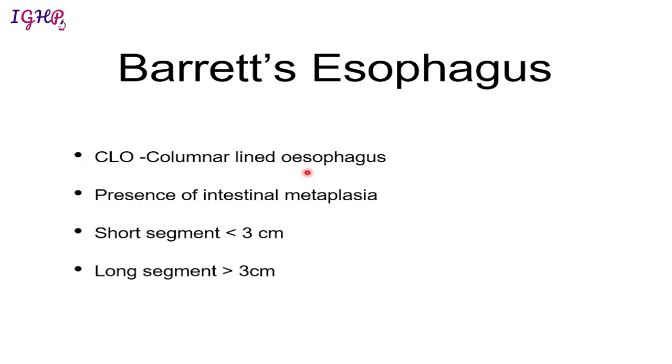The next area sampled from an esophageal biopsy is Barrett's esophagus, one of the most common indications for esophageal biopsies. Barrett's is named after the scientist who discovered this entity; pathologically it is equivalent to a columnar lined esophagus. The esophagus is normally lined by squamous epithelium, but if this epithelium changes into a columnar lined area, it is called a columnar lined esophagus.